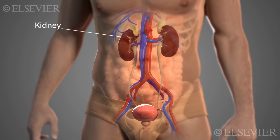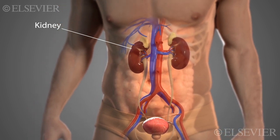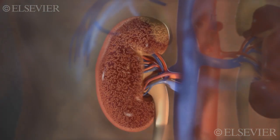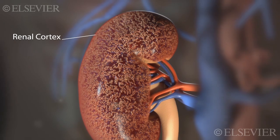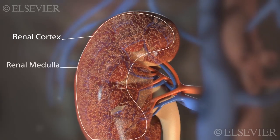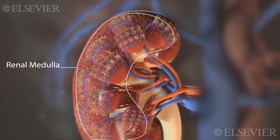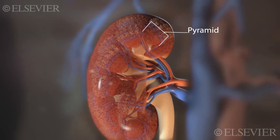The kidney consists of two major parts. The outer part is called the cortex, and the inner part is called the medulla. The medulla is made of pyramids, which are distinct triangular wedges.